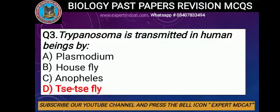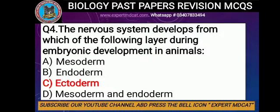Question number 4: The nervous system develops from which of the following layers in embryonic development in animals? There are three layers: ectoderm, mesoderm, and endoderm. The mesoderm gives rise to the muscular and skeletal system, while the ectoderm gives rise to the nervous system. The correct option is ectoderm.